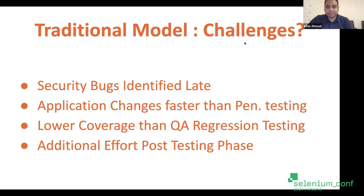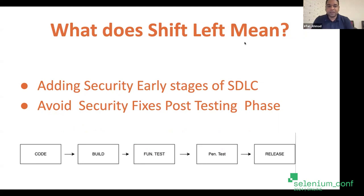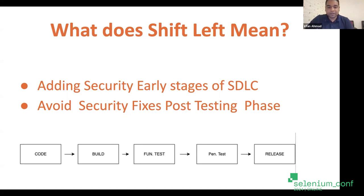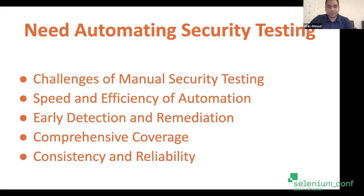So what does shift-left mean? Shift-left in terms of security means adding security early in the stages of SDLC - it can start as early as requirements, but we'll focus more on how we can do it as early as in the testing process. The number one thing is adding security in the early stages of the SDLC. The second is to avoid security fixes post-testing release, basically doing penetration testing before or together with functional testing. We need to automate it because of the challenges with manual security testing, and early detection will give more coverage.